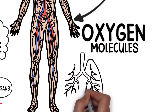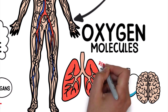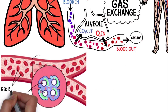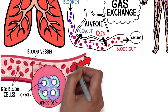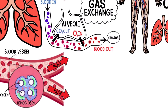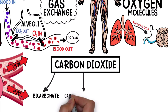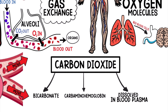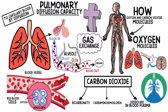The majority of oxygen molecules are transported from the lungs to other parts of the body by red blood cells. Red blood cells contain hemoglobin, which picks up oxygen molecules so that they can move through arteries to the tissues of the body. Carbon dioxide is transported as bicarbonate, carbaminohemoglobin, or dissolved in blood plasma. Understanding these basic fundamental concepts is important for respiratory therapists and medical professionals.